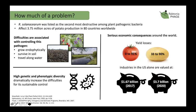How much of a problem is Ralstonia solanacearum for causing bacterial wilt disease? It was listed as the second most destructive plant pathogenic bacterium, and just looking at potato production it can affect 3.75 million acres across 80 countries worldwide.